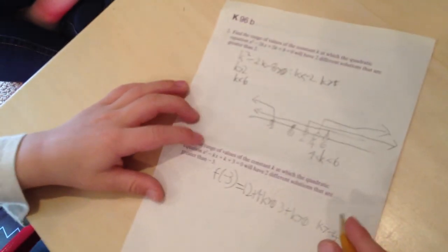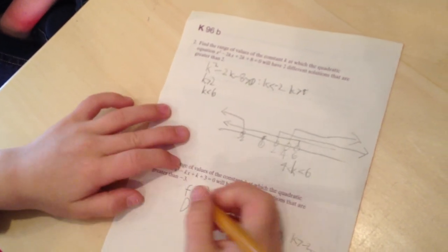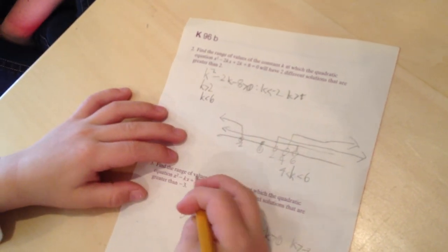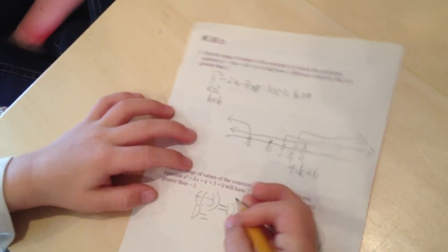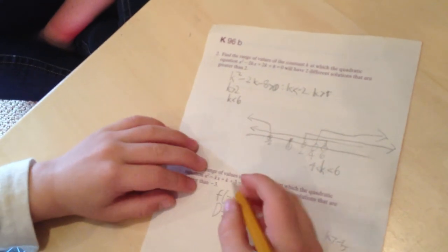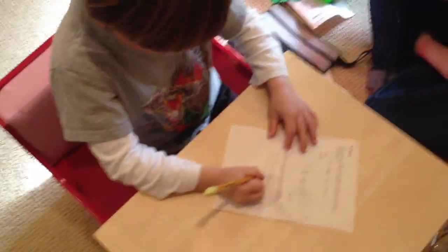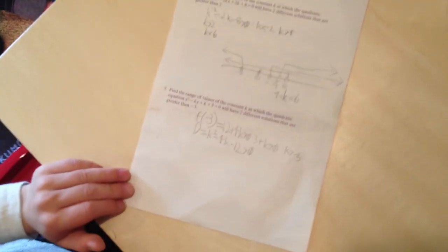Now we are going on to the discriminant. And we can't do d over 4 because the coefficient of x is not divisible by 2. Very good. So b squared minus 4ac is equal to k squared minus 4k minus 12.